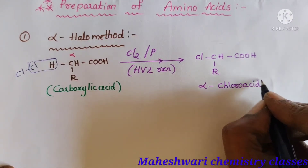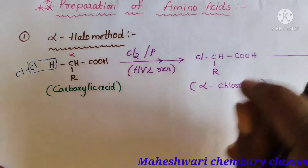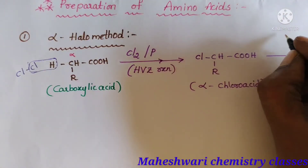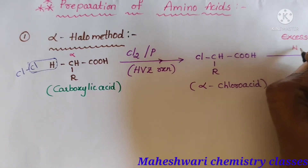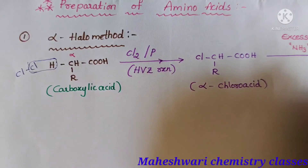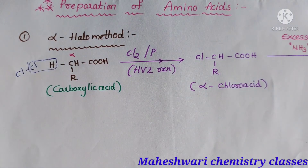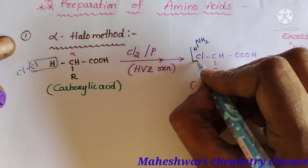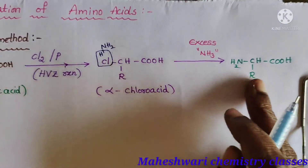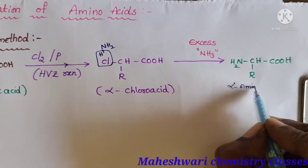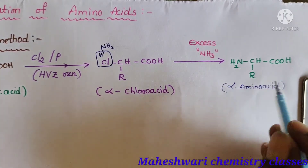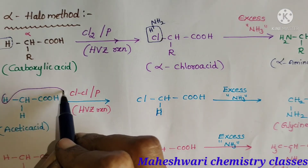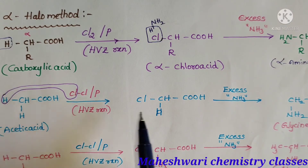This alpha chloro acid again reacts with ammonia — specifically, we have to take excess ammonia. In the presence of excess ammonia, the alpha chloro acid reacts: NH2 and H are involved, HCl is eliminated, and it forms an alpha amino acid.